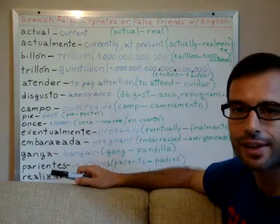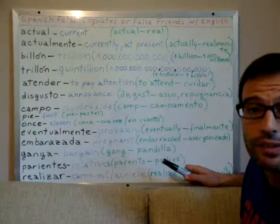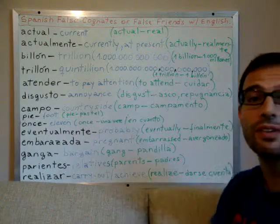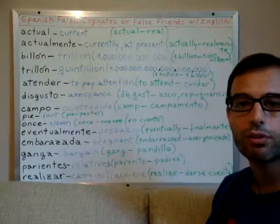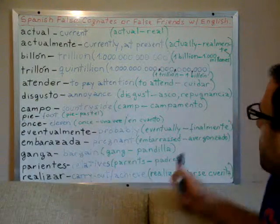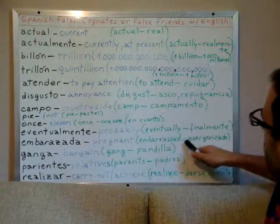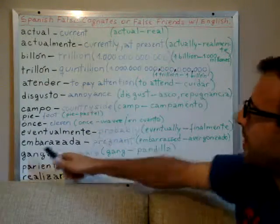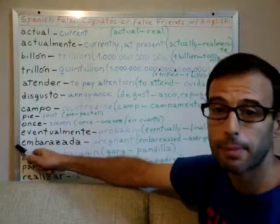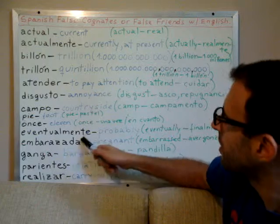The word for 'embarrassed' in Spanish is 'avergonzado' or 'avergonzada.' Remember that in Spanish adjectives change to masculine or feminine — so 'avergonzado' or 'avergonzada,' same as 'embarazado' or 'embarazada.' However, it is impossible for a man to be pregnant, so 'embarazada' is usually or always feminine.